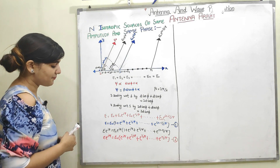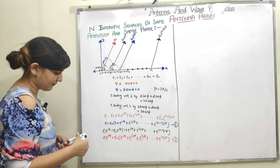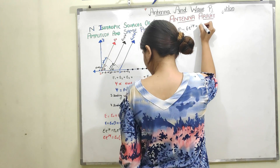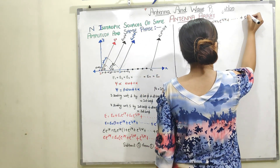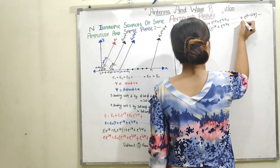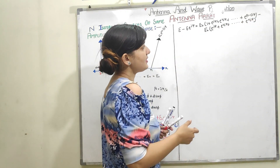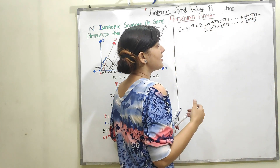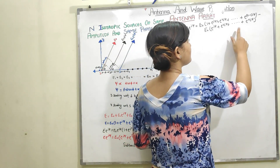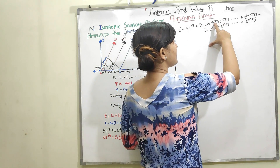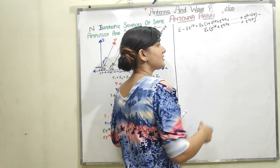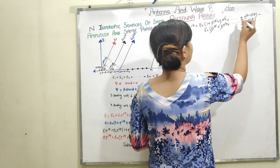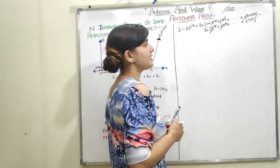Now subtracting equation 2 from equation 1, all the intermediate terms have opposite signs and cancel out — for example, e^(j·psi) minus e^(j·psi) equals zero. After cancellation, all terms up to e^(j·(N-1)·psi) cancel, and I am left with the remaining terms.